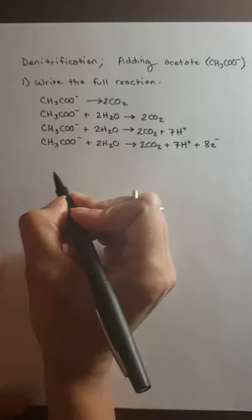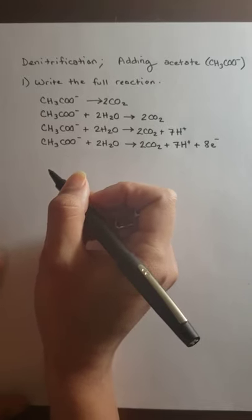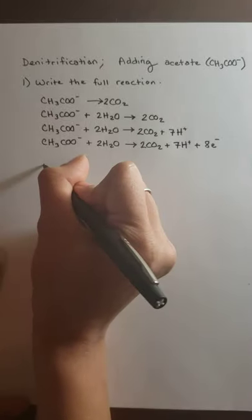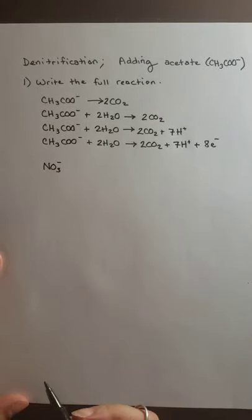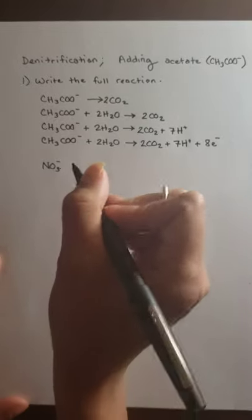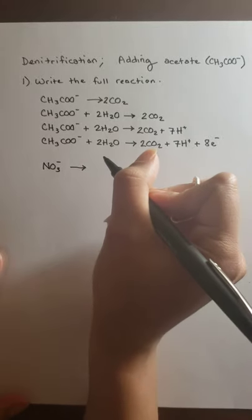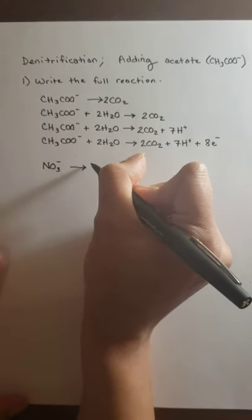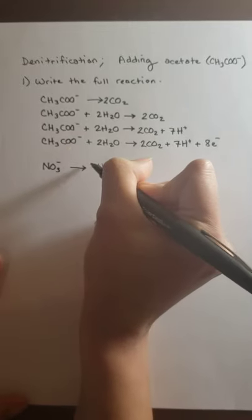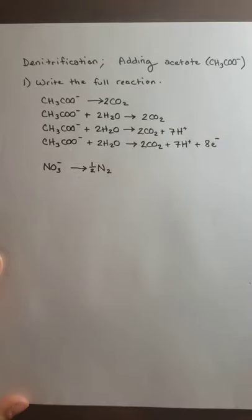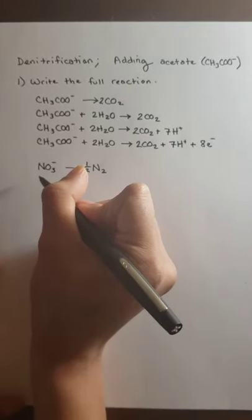Now we do the same thing with our electron acceptor, which is nitrate. In denitrification, we take nitrate all the way to nitrogen gas. We balance our nitrogens with N₂ — we have two nitrogens on the right and one on the left, so we use a coefficient of one-half on the N₂ side.